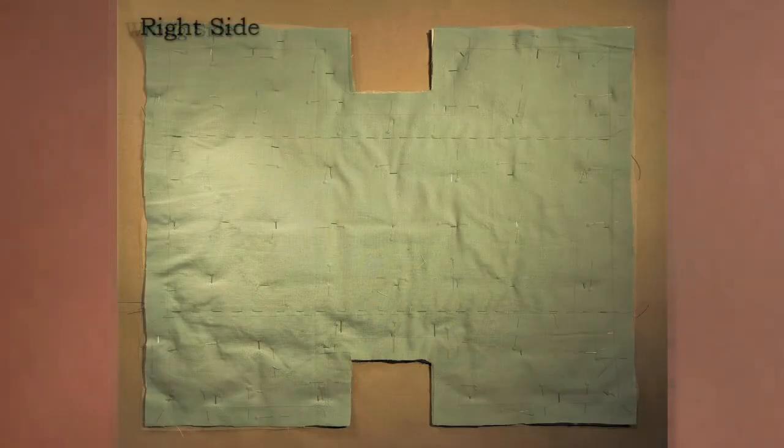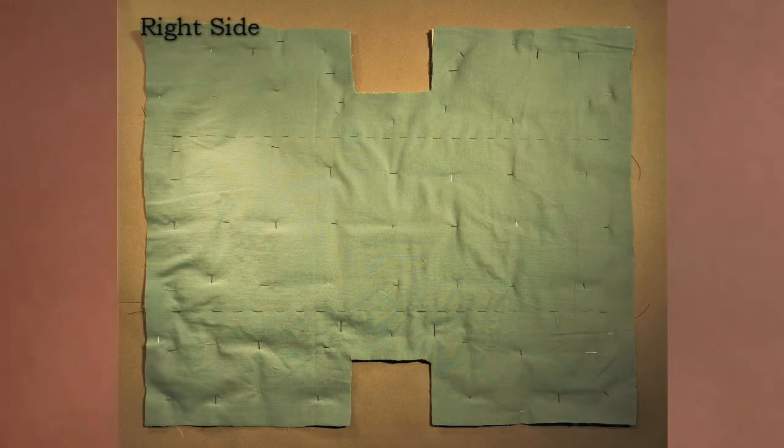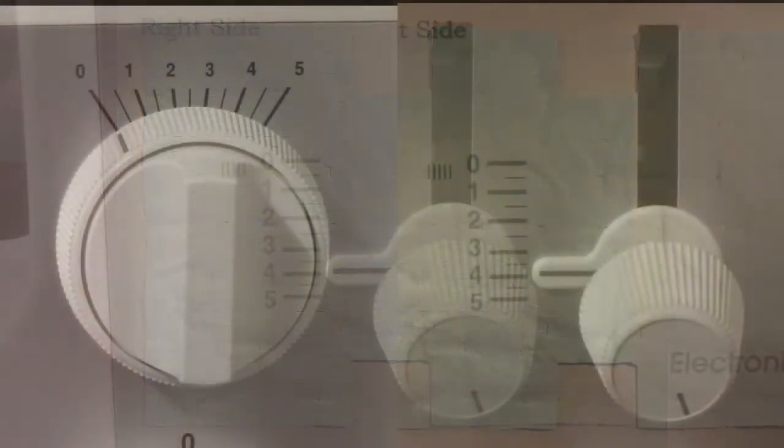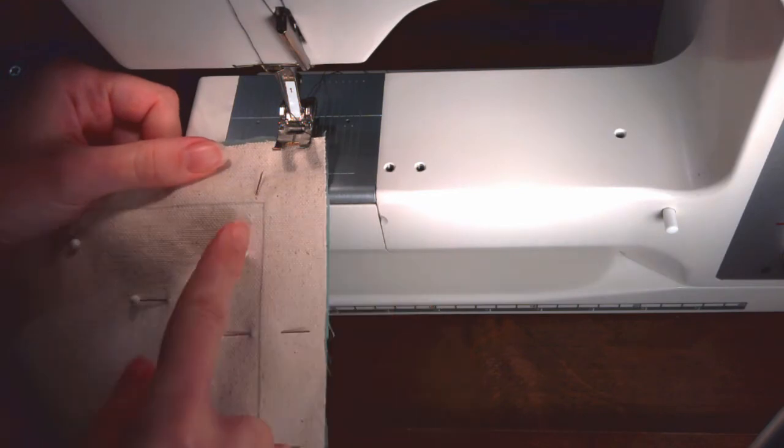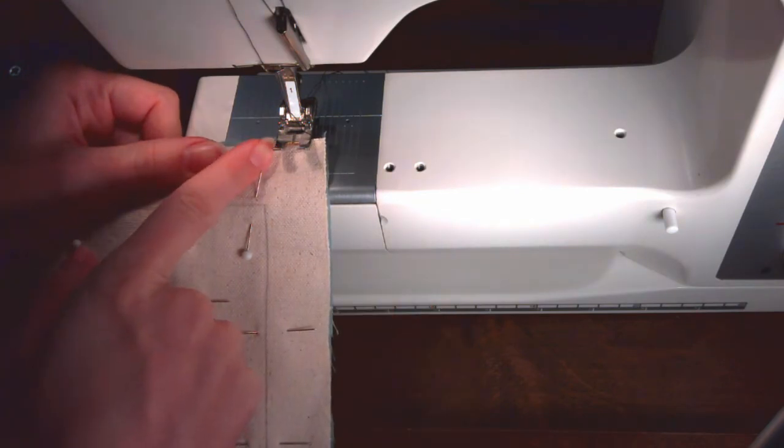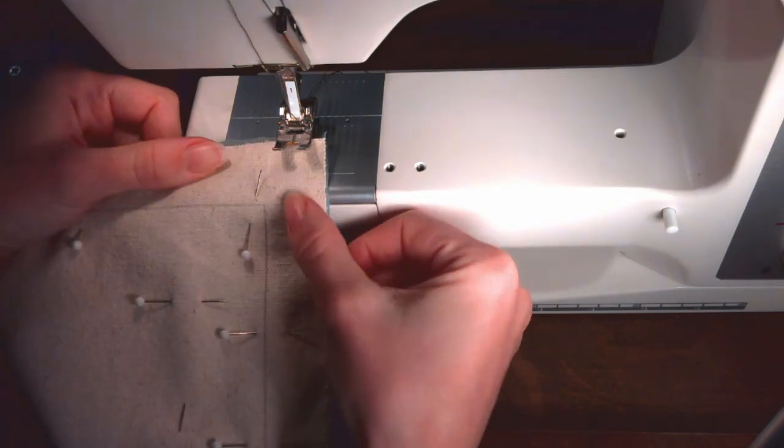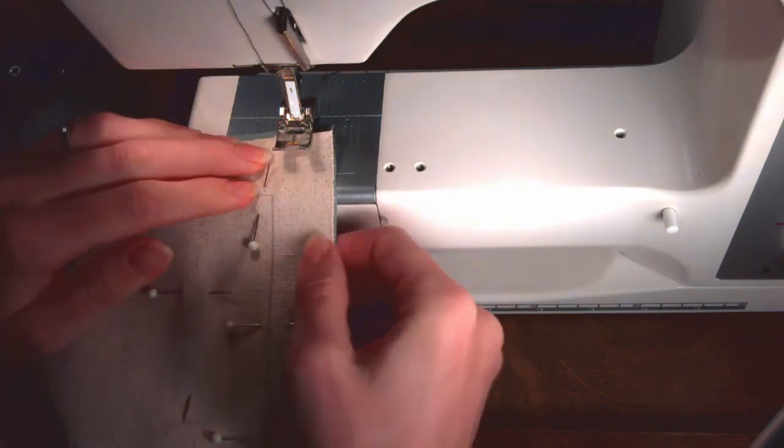Now use the sewing machine to flat line the two layers together. Set the sewing machine to a stitch width of 0 and a stitch length of 4 with the needle in the center position. Line up the edge of the presser foot with the stitch line. This will create a stitch a quarter inch from the stitch line into the seam allowance.